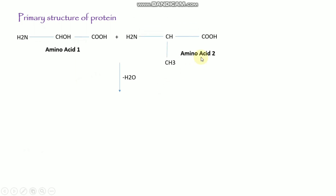So now I am going to talk about the primary structure of the protein. The primary structure is the simple structure of the protein — there is no branching. This is only the linear structure of the protein by formation of the peptide bond. Here is amino acid 1 and here is amino acid 2. When it forms the bond between the amino group and the carboxyl group, one molecule of water is released and then it forms the peptide bond, making a small protein.